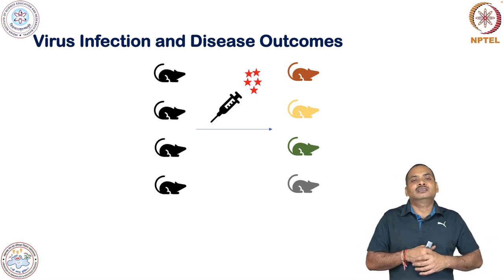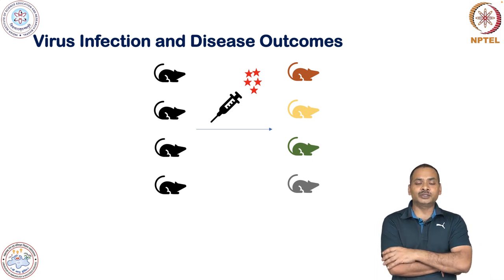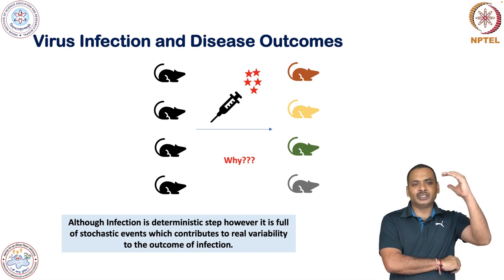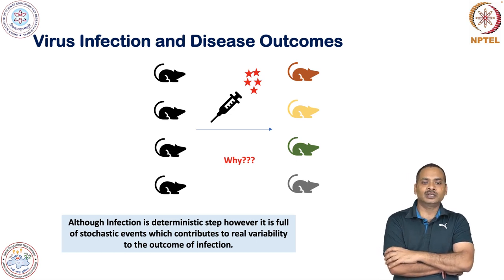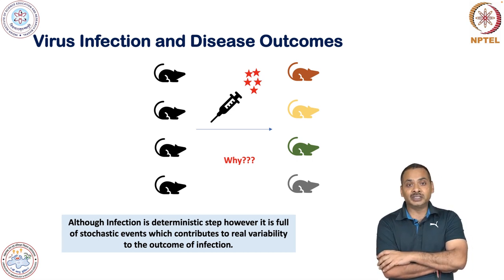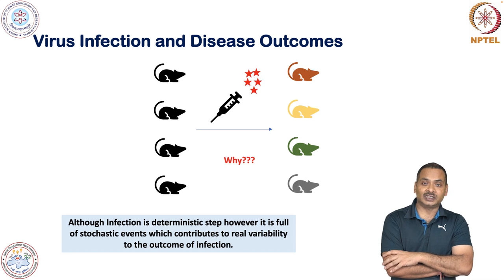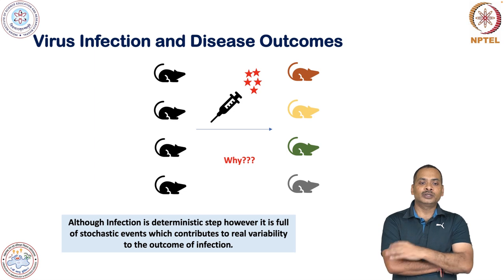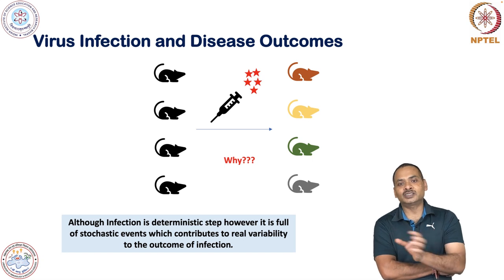Why is it like that? This is happening because of the infection process. Although we have controlled everything — age, sex, virus — it is a deterministic step but full of stochastic events, which contribute to real variability in the outcome of infection. Stochastic event means it is a random event.